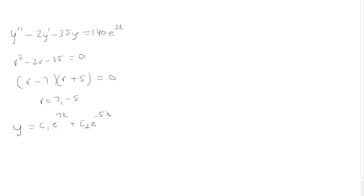But this is just for the homogeneous case. To solve for when the equation equals 140 e to the 2t, we let y sub p be a constant a times e to the 2t. We need to take the first and second derivatives of this.